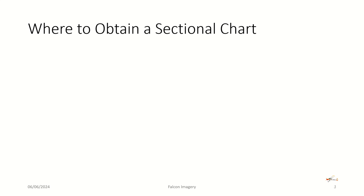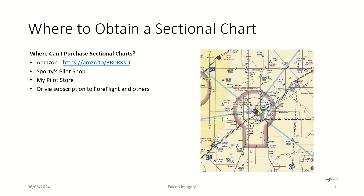So where can you obtain a sectional aeronautical chart? You can purchase them from a number of resources — Amazon.com, Sporty's Pilot Shop, My Pilot Store. Or if you have a subscription to something like ForeFlight or Garmin Pilot, those electronic flight bags automatically include up-to-date current sectional charts among many other charts and features.